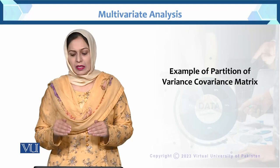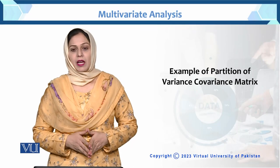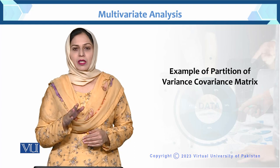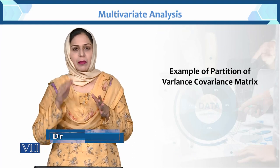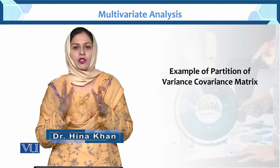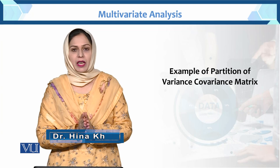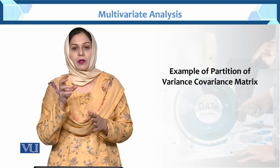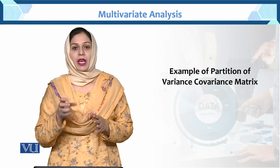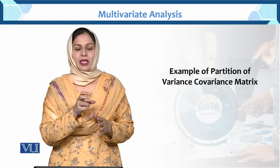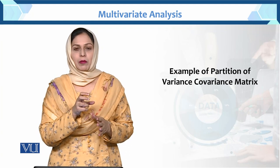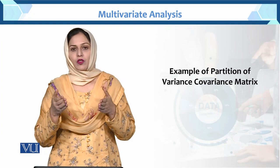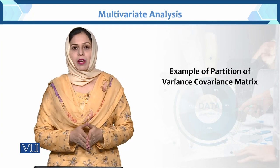Dear student, this is the example of partition of variance-covariance matrix. We have checked mathematically what a variance-covariance matrix is. Now we will check it numerically — how is the partition done, how we can say variables are independent, and how we can say they are dependent. We will study the scenario and the structure here.